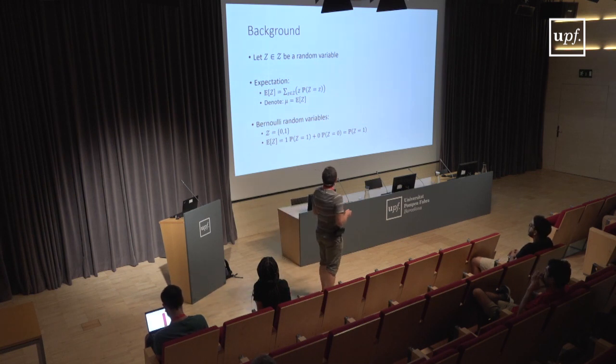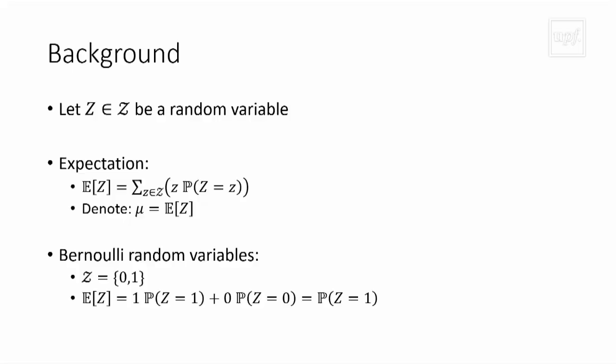A little bit of formal background. We have z, a random variable. We use the expectation of z, which is the sum — or an integral for a continuous random variable — of the value times the probability of observing that value. Throughout the talk, we'll use mu to denote the expectation. For a Bernoulli random variable with domain {0, 1}, the expectation equals the probability of observing 1.